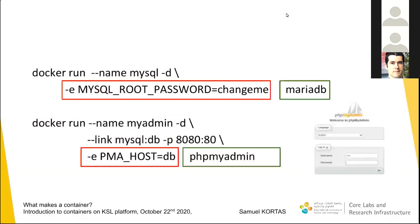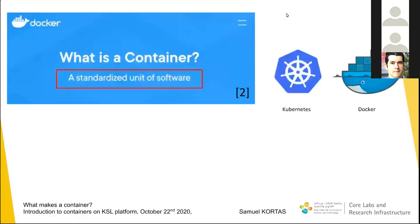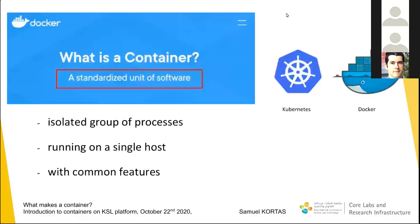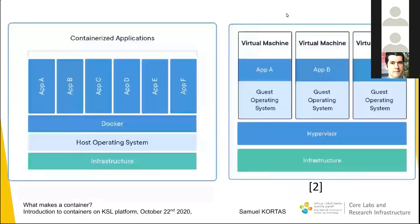So let's understand how a container works. According to Docker documentation, a container is a standardized unit of software. More precisely, a container can be seen as isolated groups of processes running on a single host, which fulfill a set of common features. That's exactly why it is so pertinent when it comes to delivering an application environment. As it is isolated and bundles both processes and features, it's a unique way to transport conveniently a whole environment from one machine to another. It is also a very light way to do so compared to a virtual machine that could cover the same purpose.